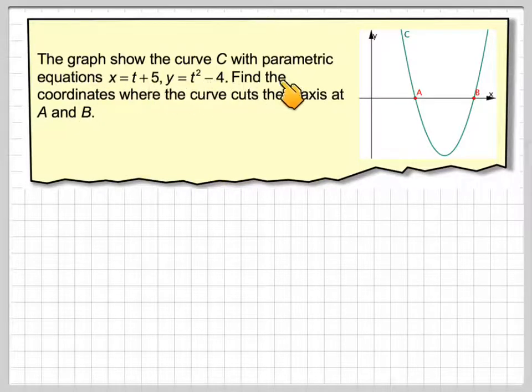The graph shows the curve C with parametric equations x equals t plus 5 and y equals t squared minus 4. Find the coordinates where the curve cuts the x-axis at A and B.